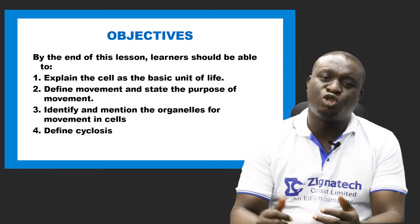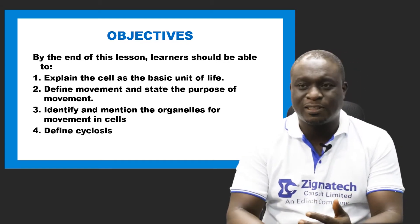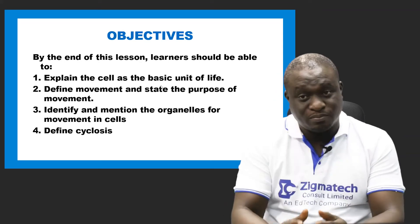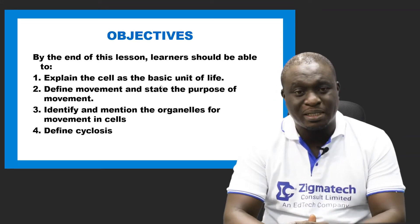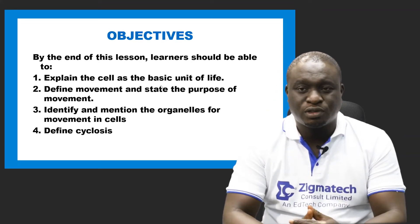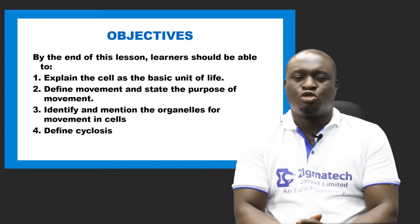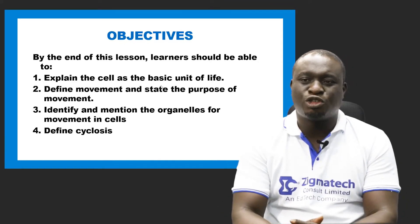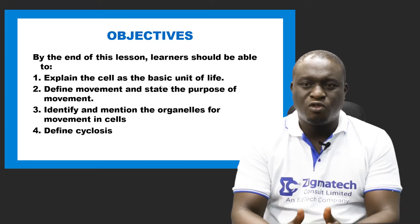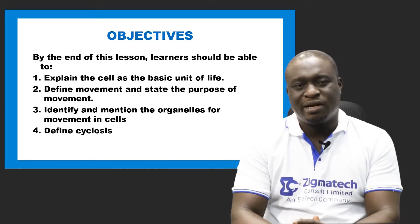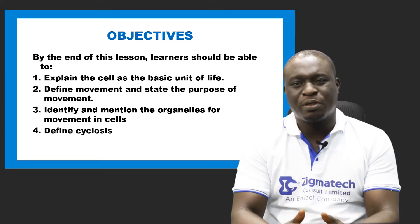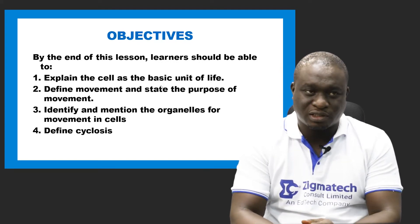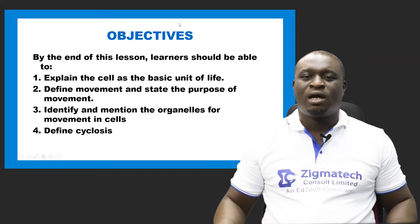Number two, you should be able to define movement and state the purpose of movement. Number three, you should be able to identify and mention the organelles for movement in cells. And number four, you should be able to define what we call cyclosis.